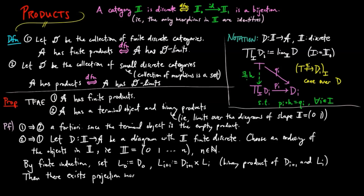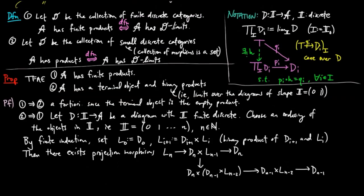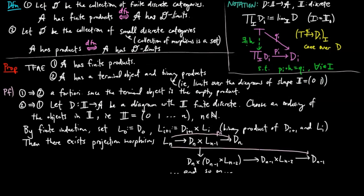Then we see that there exist projections from L sub n given by concatenating the projections of the binary products. We name these projections P sub i for each i.